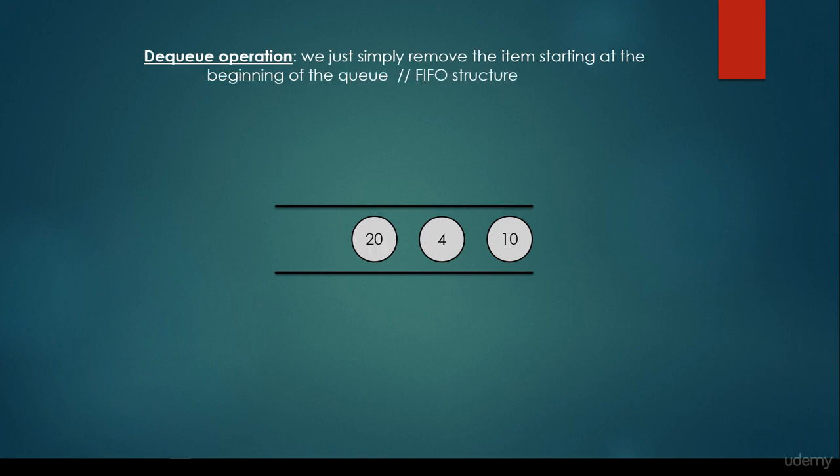What about the dequeue operation? We just simply remove the item starting at the beginning of the queue, because it has a FIFO structure. So the first item we insert is going to be the first item we take out.